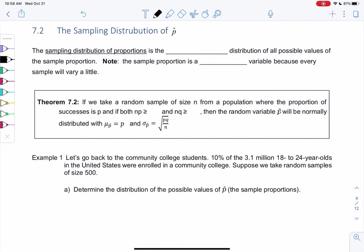Section 7-2, the sampling distribution of p-hat. Last section we looked at the mean and standard deviation. Now we're curious what shape does it make?